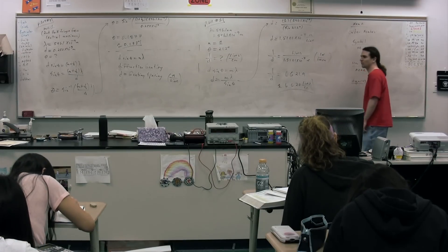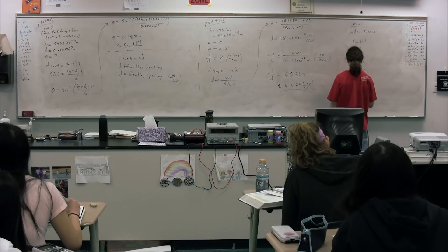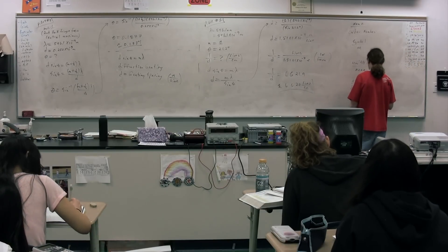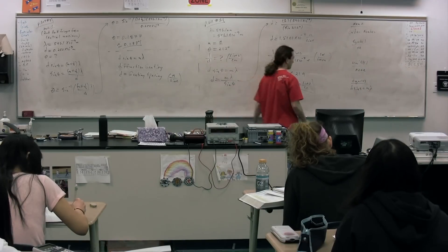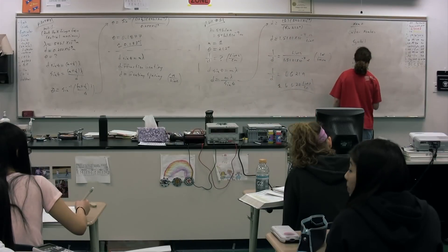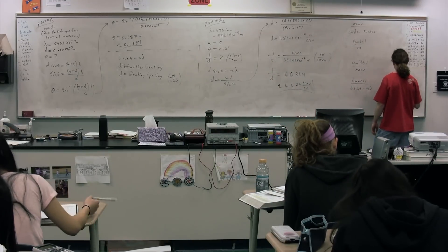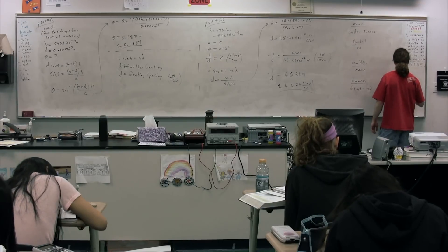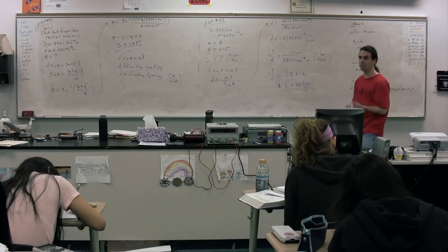We have two equations for order number. Mitch, give me one. D sine theta equals M lambda. What is this equation specifically for, Amy? Constructive interference. This would be for constructive interference, or where we get bright spots, or what we call a maxima.